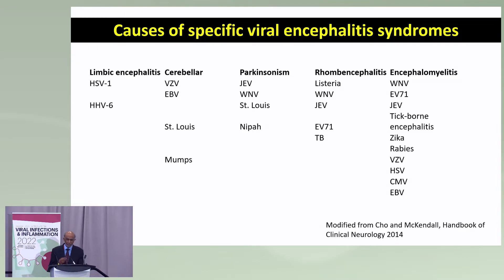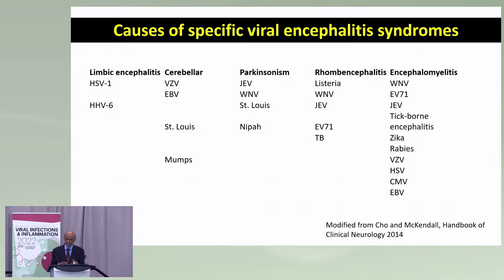Some viruses affect largely the basal ganglia and can cause Parkinsonism. Some cause rhombic encephalitis — the rhombic encephalon being the hindbrain. Among those, I've listed Listeria, which is a bacterium that often gets missed. I've seen many physicians get sued for missing Listeria because they don't realize it can travel from the gut along the vagus nerve to the brainstem, presenting as an abscess or meningitis. It should be considered in every patient with rhombic encephalitis.